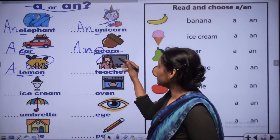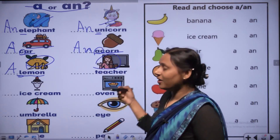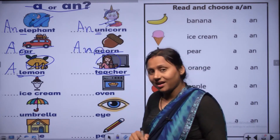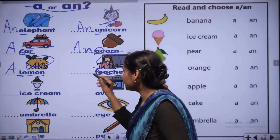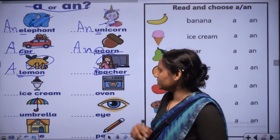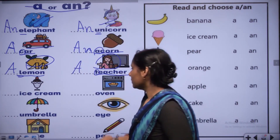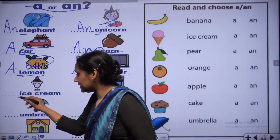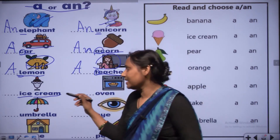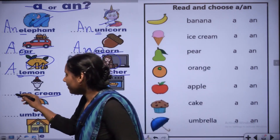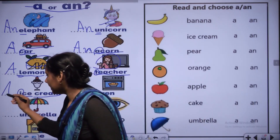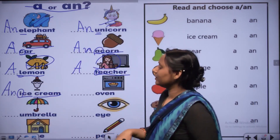This is the picture of a teacher - T, E, A, C, H, E, R. First letter T is consonant, so we use A - a teacher. This is ice cream - I, C, E, C, R, E, A, M. I is a vowel, so we use AN - an ice cream.